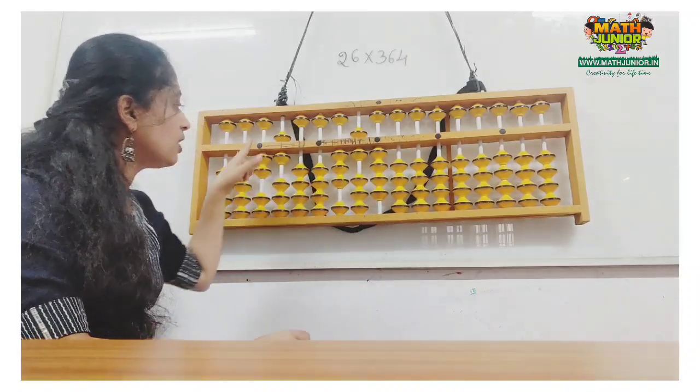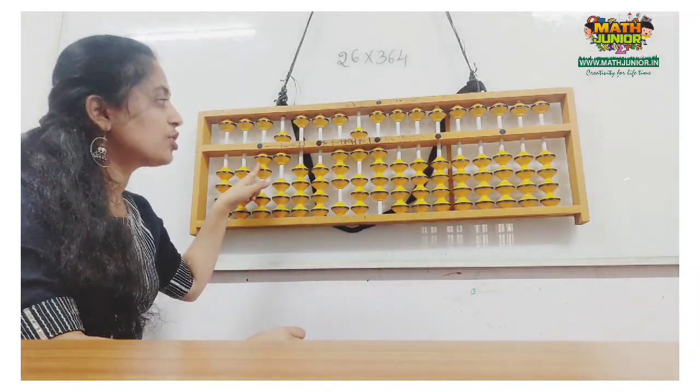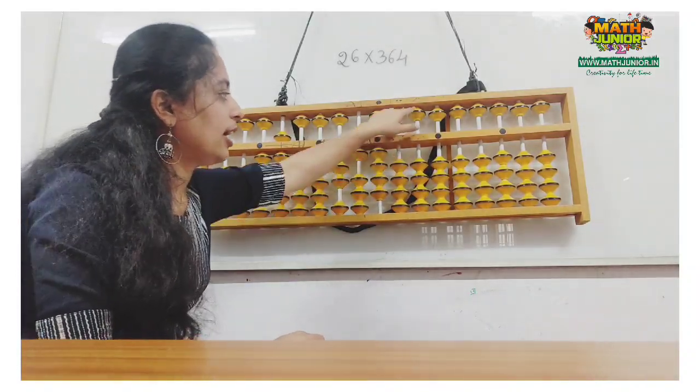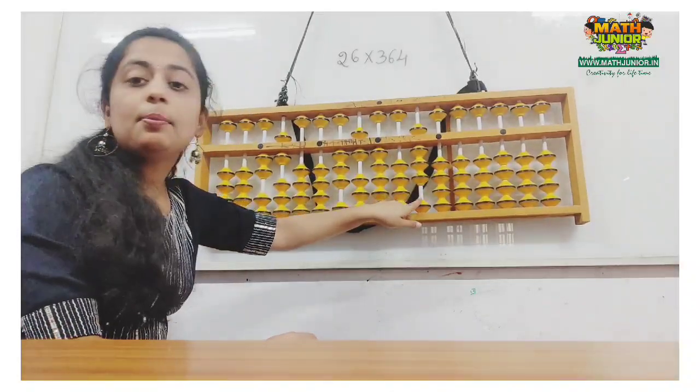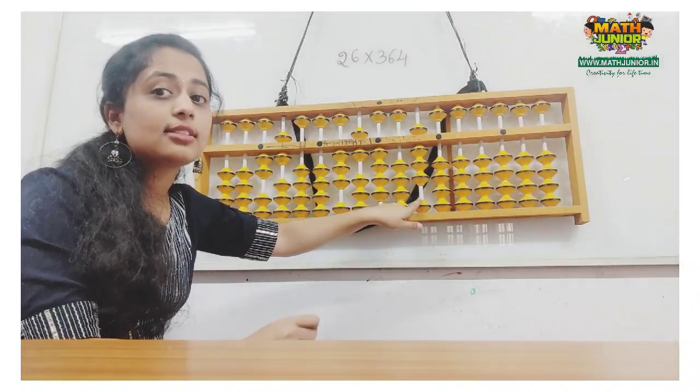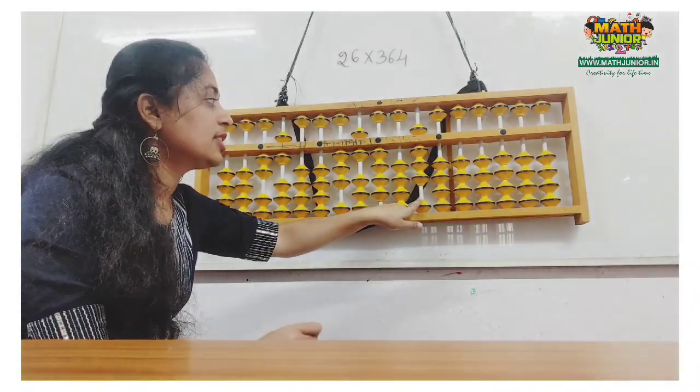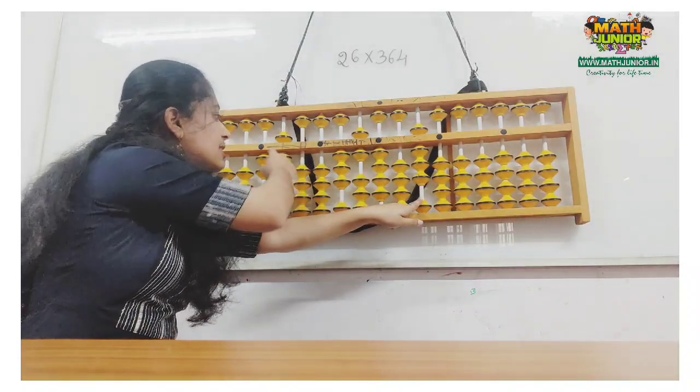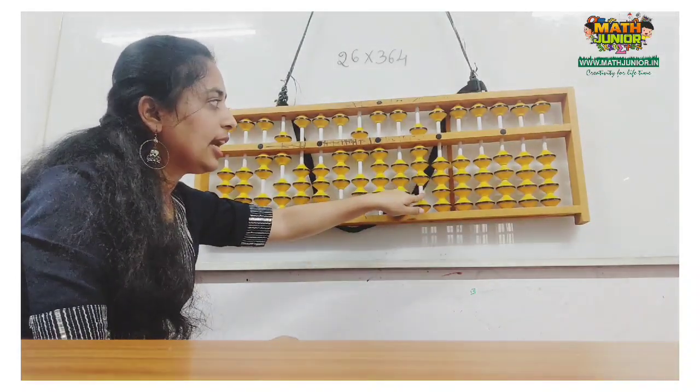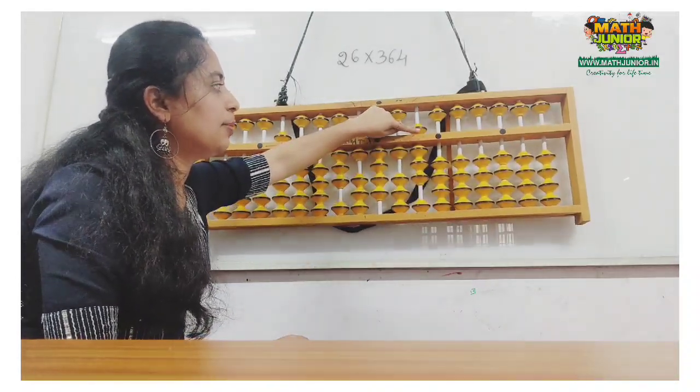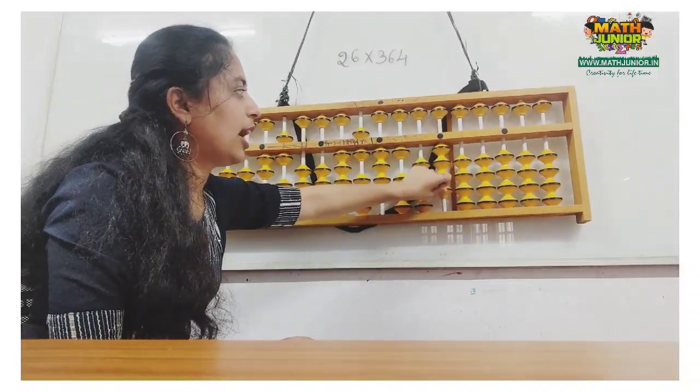First, 4 multiplied with outermost rod 2. 4 twos are 8. Place 8 and put the finger in the place where you stop because the next number I need to start from this rod. Next, 4 sixes are 24. I cannot add 20 directly, so plus 100 minus 80, then 4 directly.